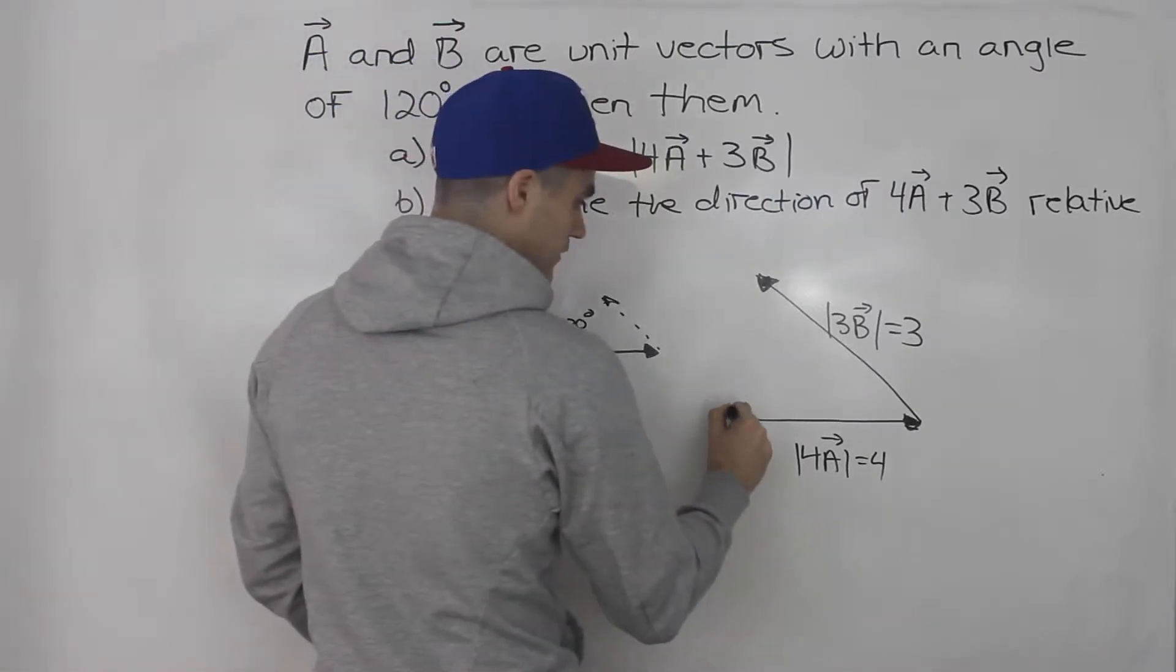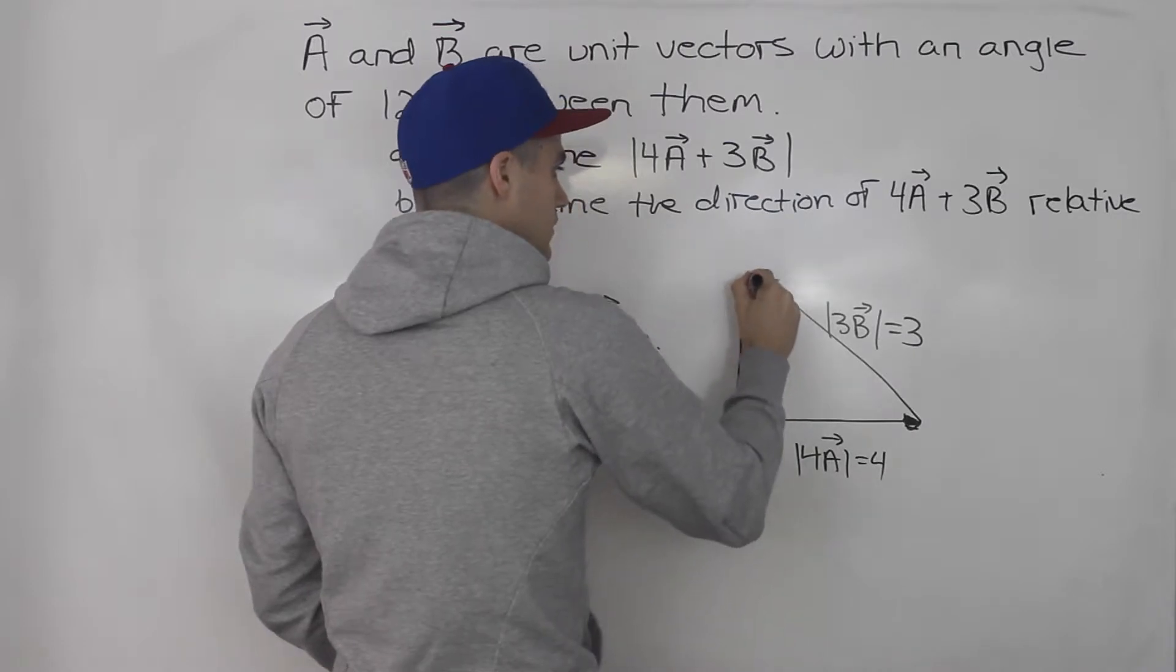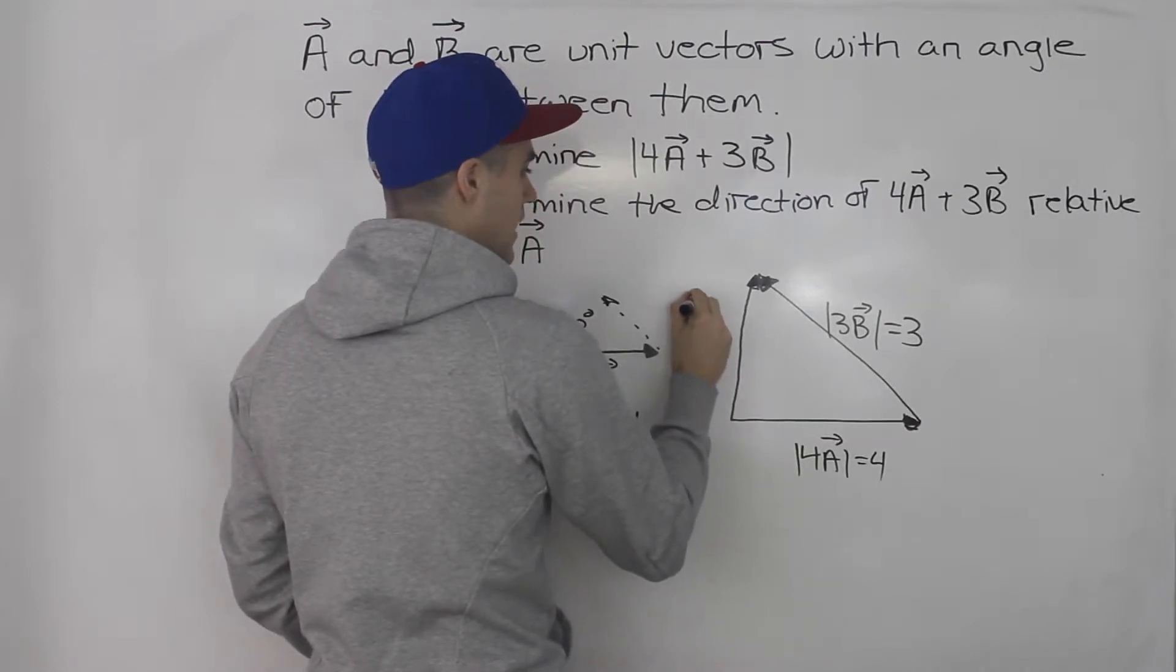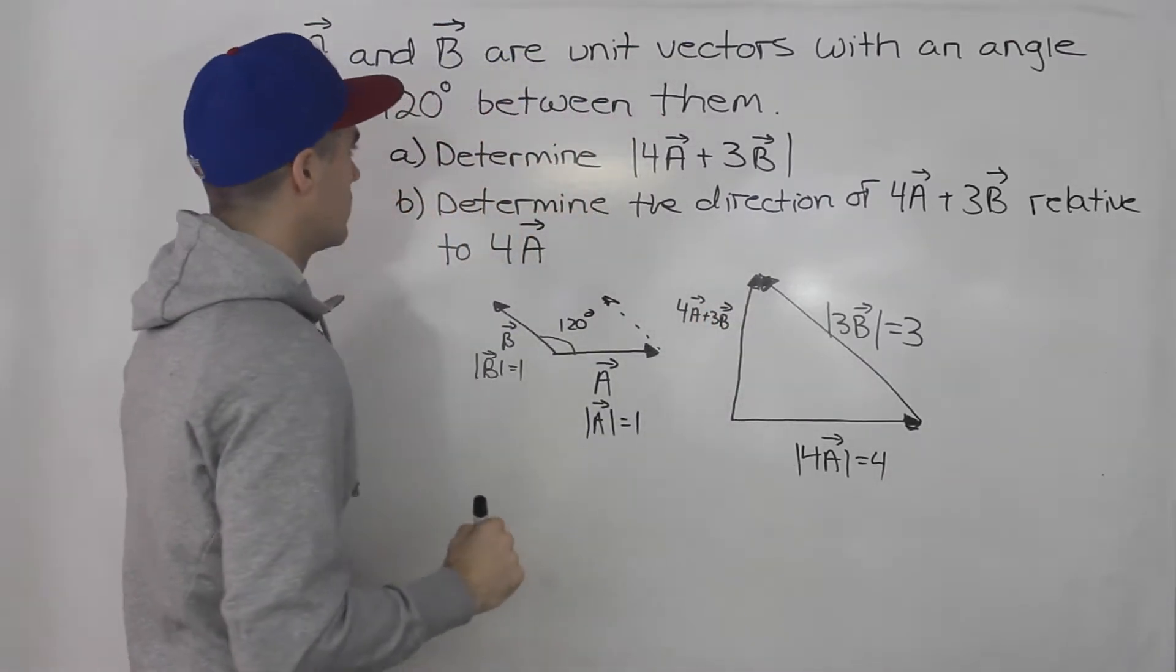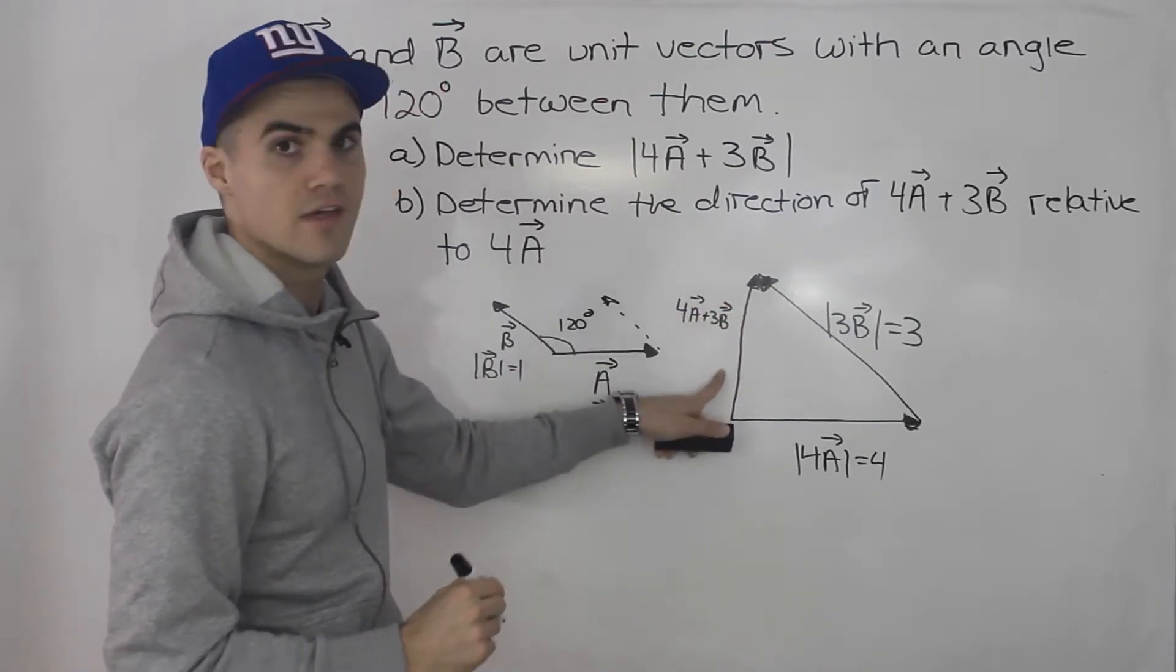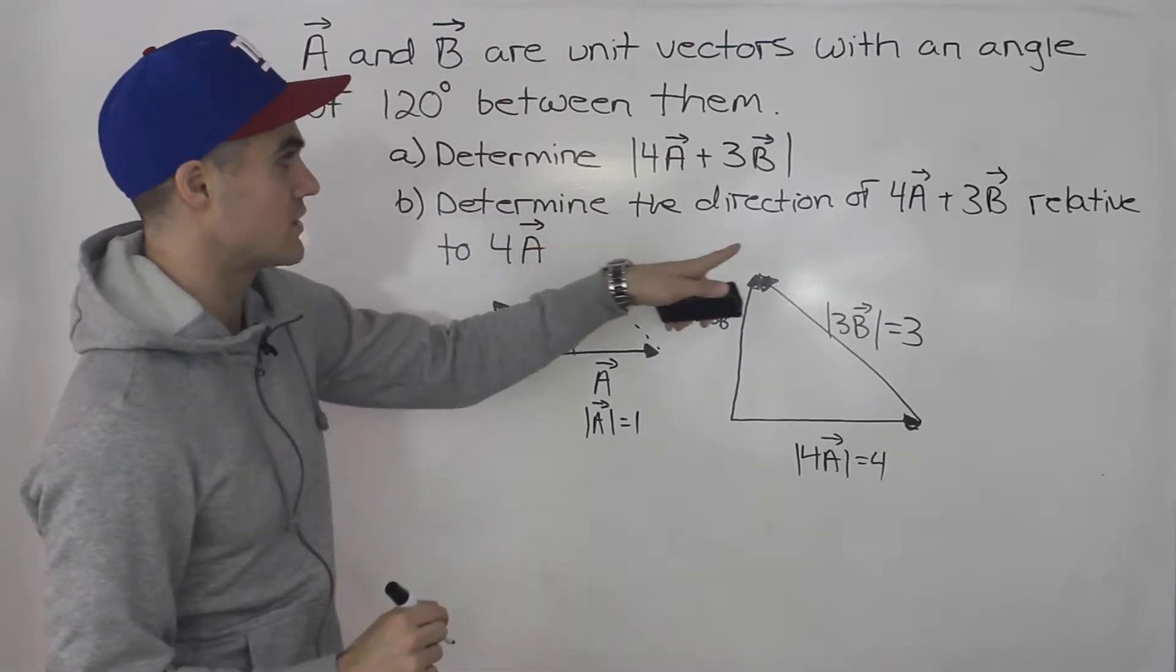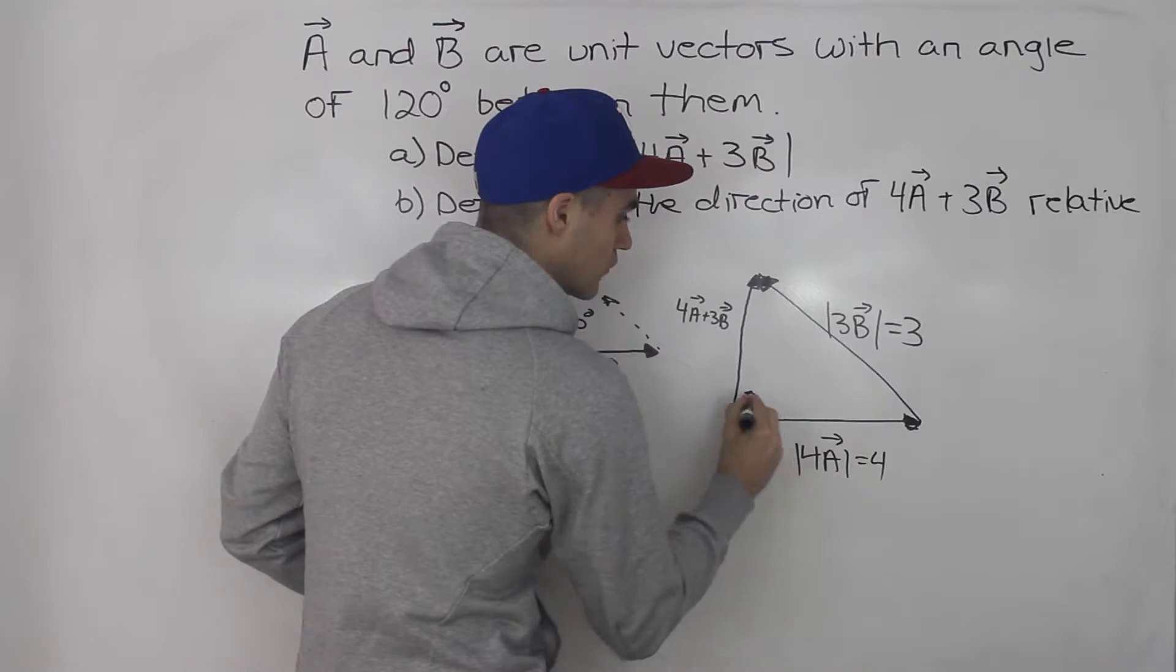And because vector b is the unit vector, the magnitude of this is going to be 3. So this vector, the resultant from the tail of the first vector to the head of the last vector, this vector here represents 4a plus 3b. So in part a, we have to determine what is the magnitude of this. And then for part b, we have to determine the direction of this vector 4a plus 3b relative to 4a. So we're going to have to solve for this angle over here.